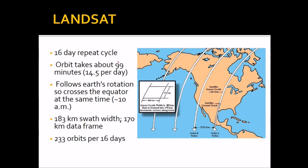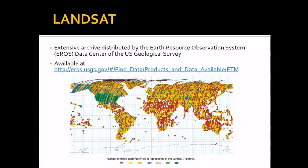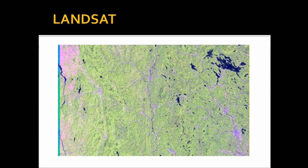The Landsat orbit takes around 99 minutes — roughly 1.5 hours — and follows Earth's rotation, crossing the equator at the same local time, around 10 a.m. It has a 183-degree swath and a 170-kilometer data frame, which is the size of imagery provided. Landsat has an extensive archive distributed by the EROS data center, also available online.